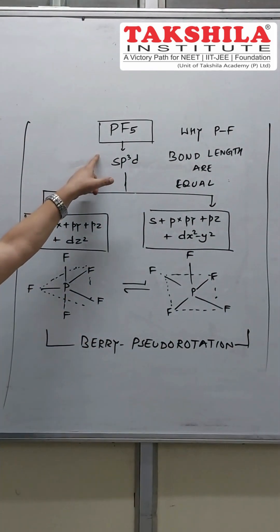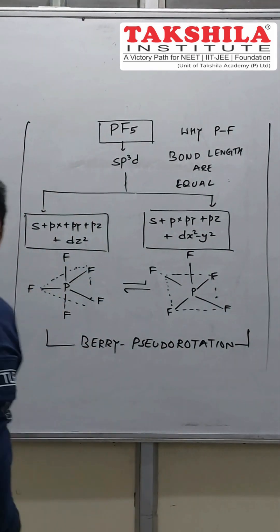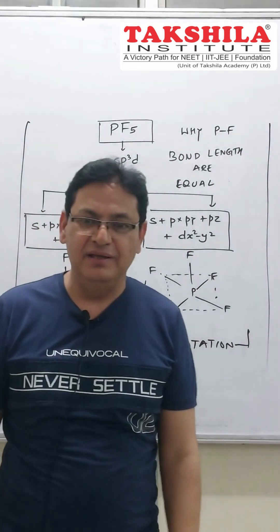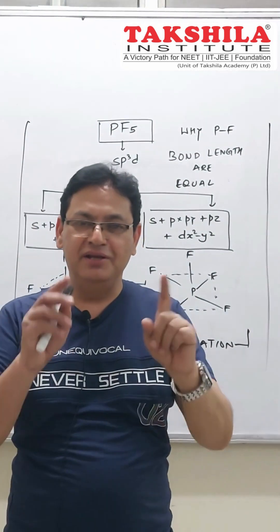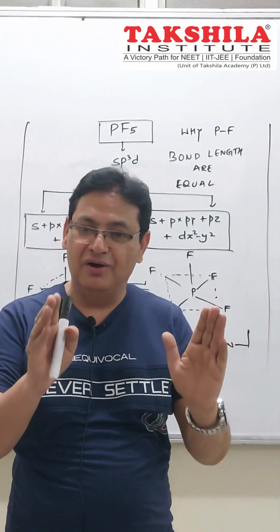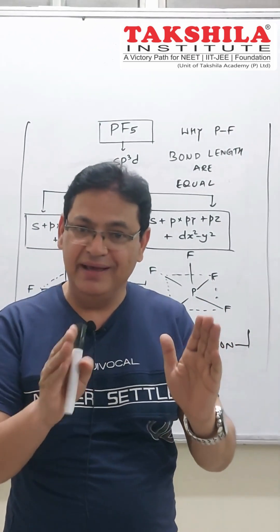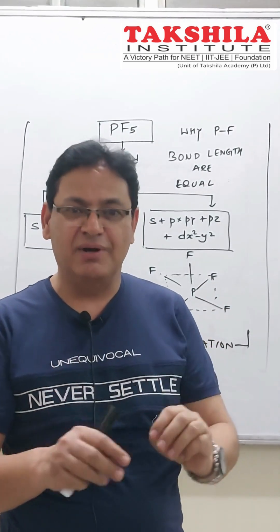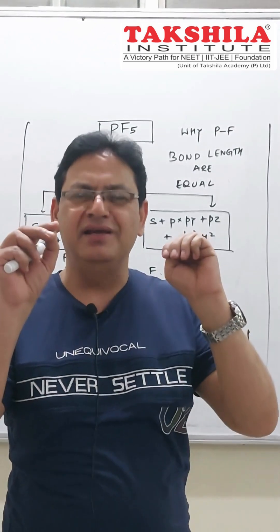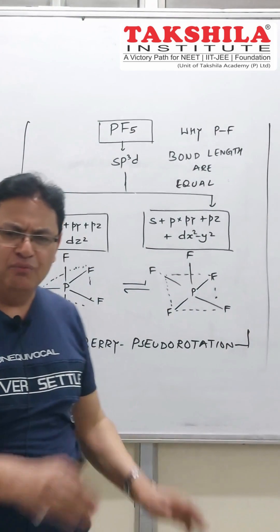The hybridization in PF5 comes out to be SP3D. The d orbitals involved might be dxz, dz², as well as dx²-y².